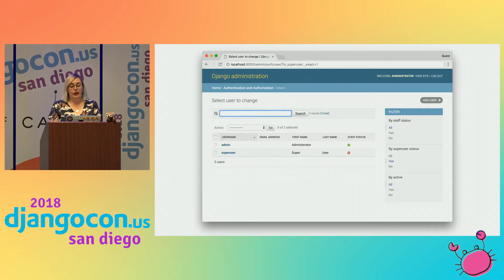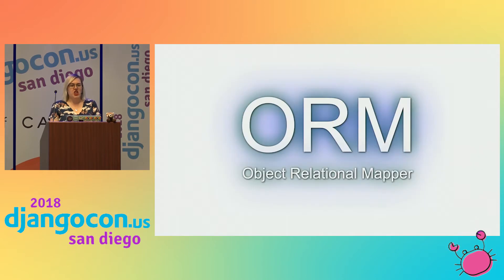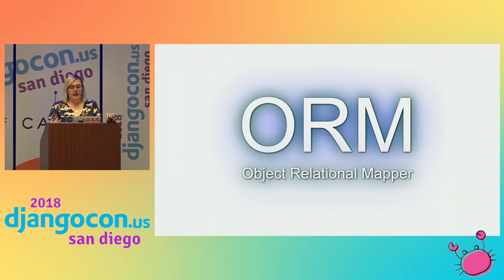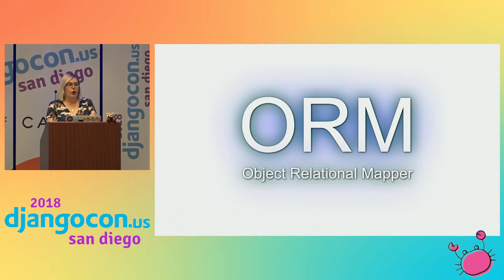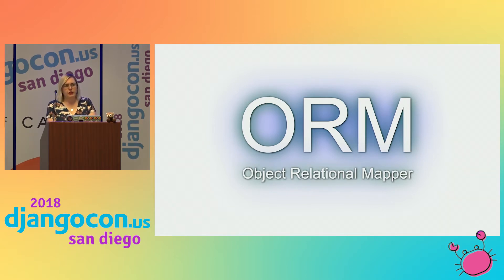But the more I learn about Django, the more I understand how the admin works. It's powered by the ORM — the object relational mapper — which allows us to interact with our data as Python objects. Now, here's where I could start teaching you about how the ORM works based on abstract thoughts and concepts, assuming that you know nothing about technology. But I'm going to go a different way.